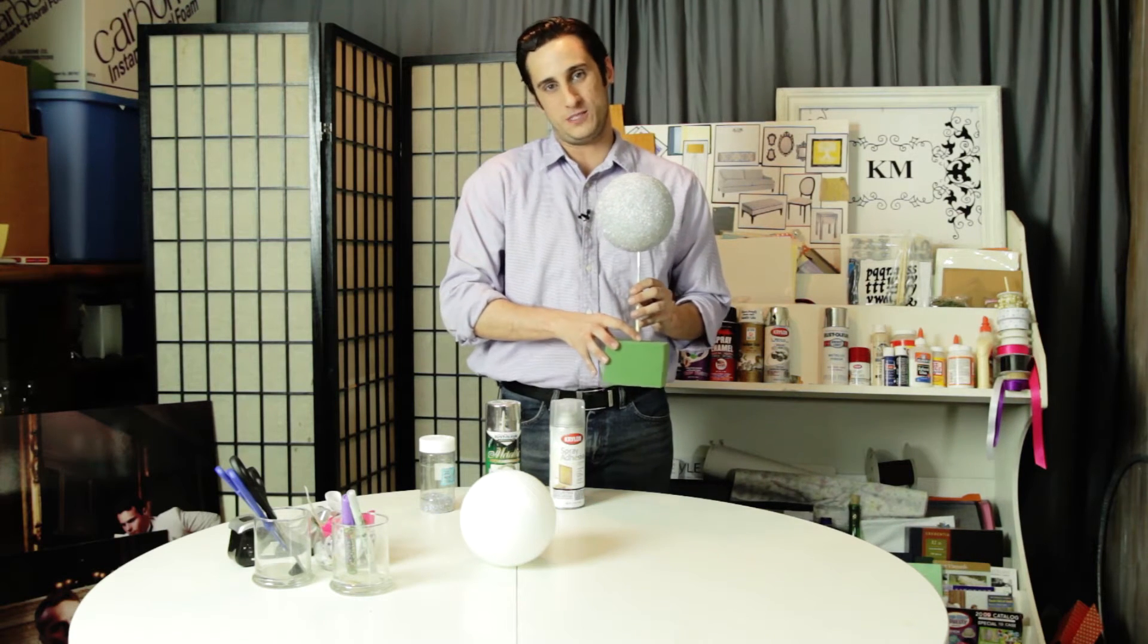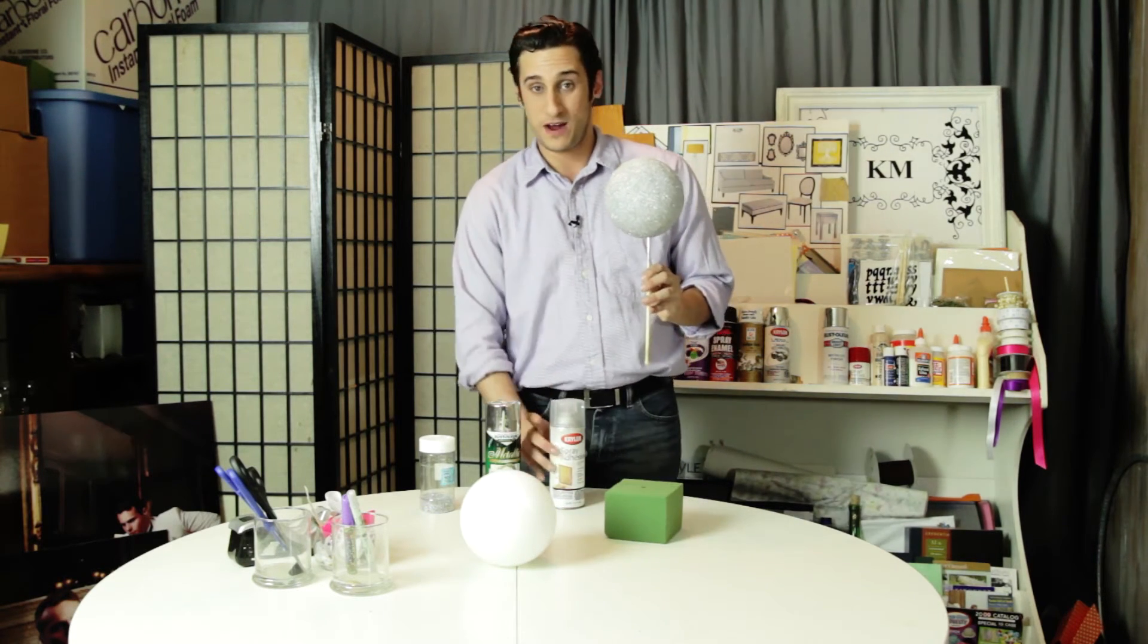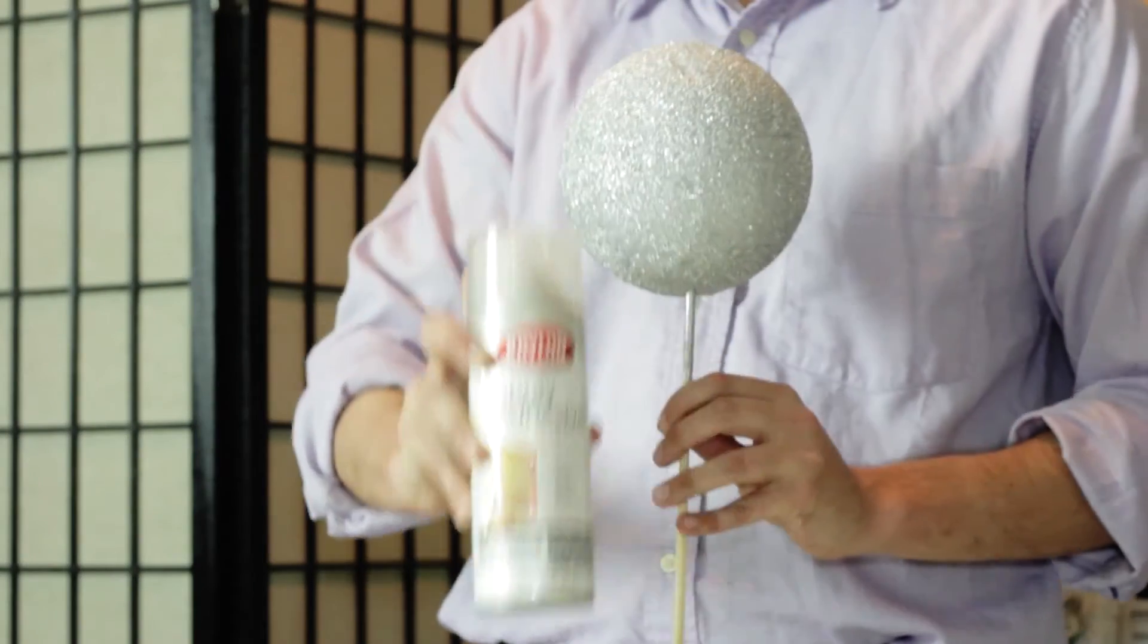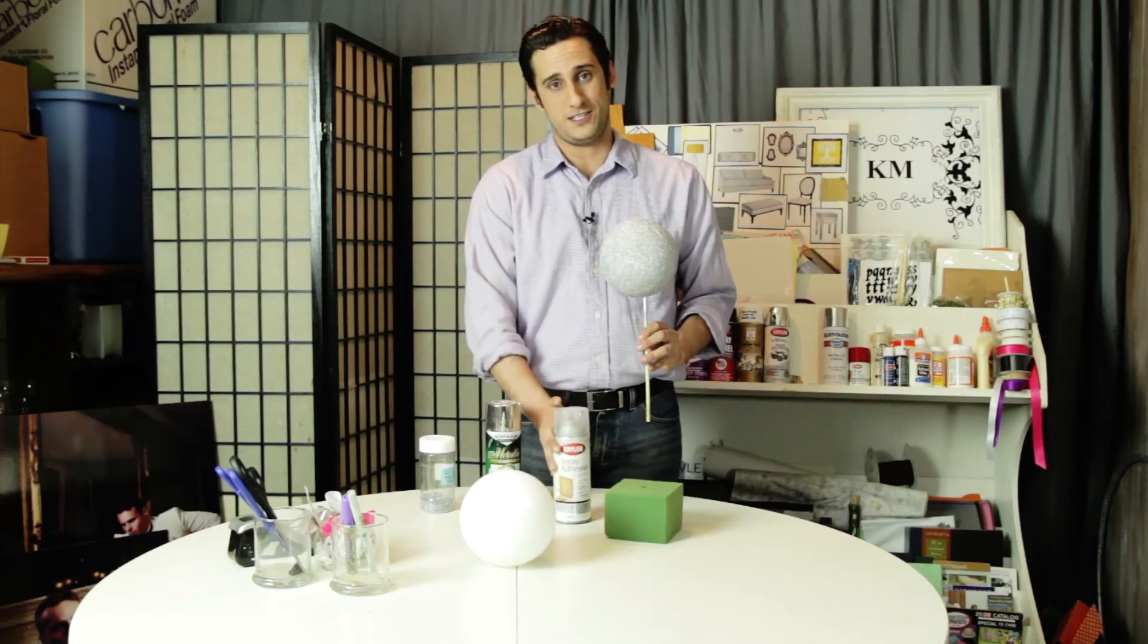Once you've got it completely coated with the spray paint, all you're going to do is take your spray adhesive and go ahead and give it an even coat of spray adhesive on the outside. This is what our glitter is going to stick to.